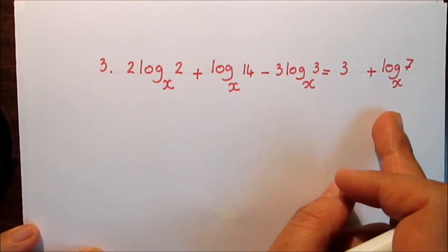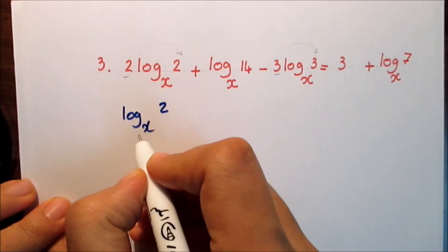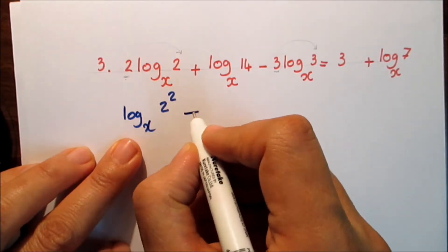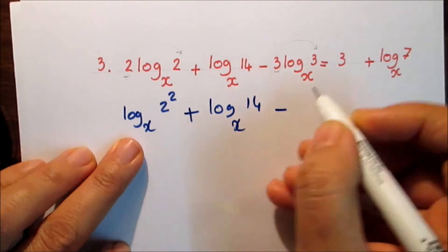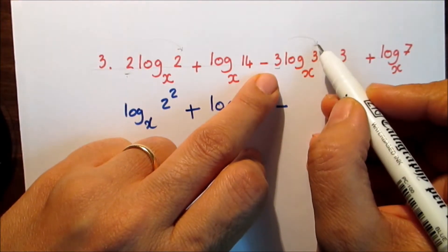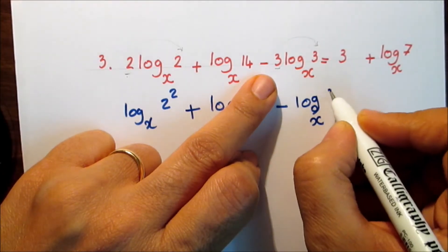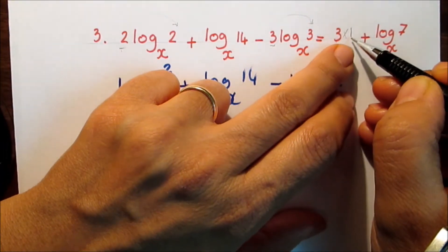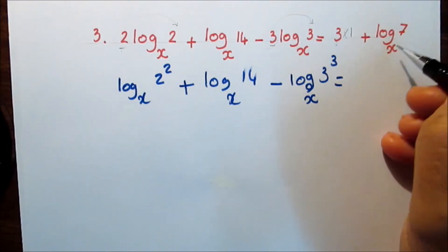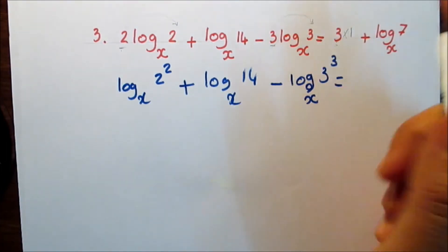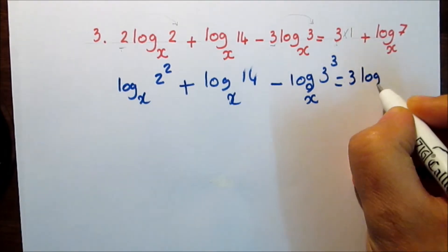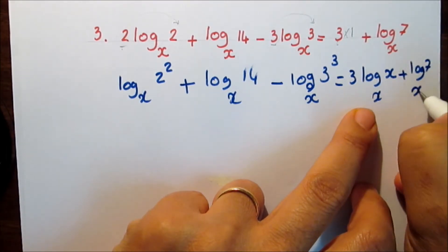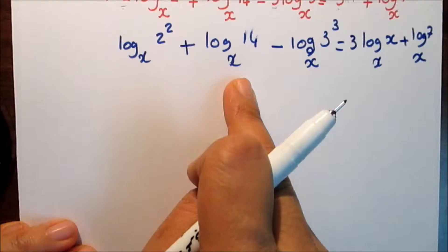Number three: Find in R the solution set of the following equation. We have log base x of 2, and we move 2 to be an exponent: log base x of 2 squared, plus log base x of 14, minus 3 times log base x of 3 cubed. The right-hand side, 3, equals 3 times 1, which we rewrite as 3 times log base x of x, plus log base x of 7. Now change the addition outside the logarithm into multiplication inside the logarithm.